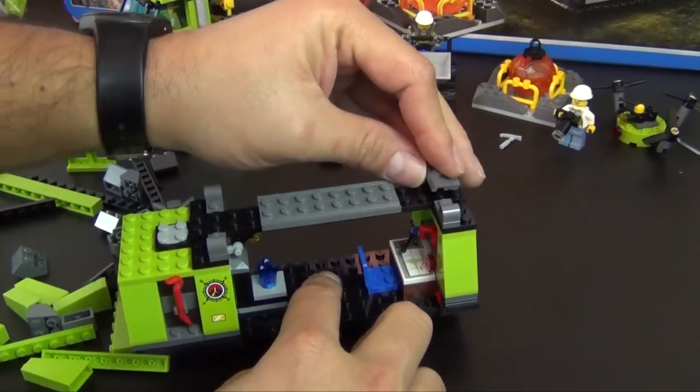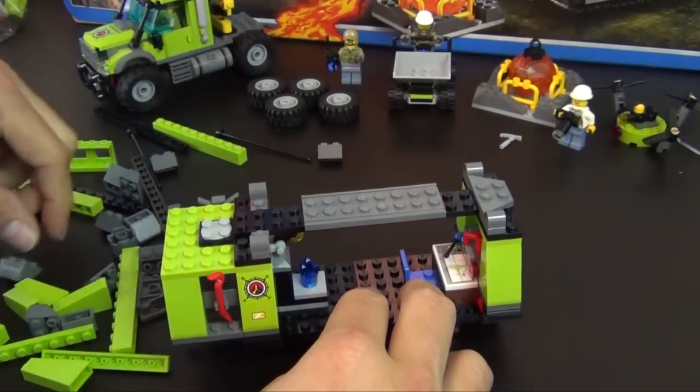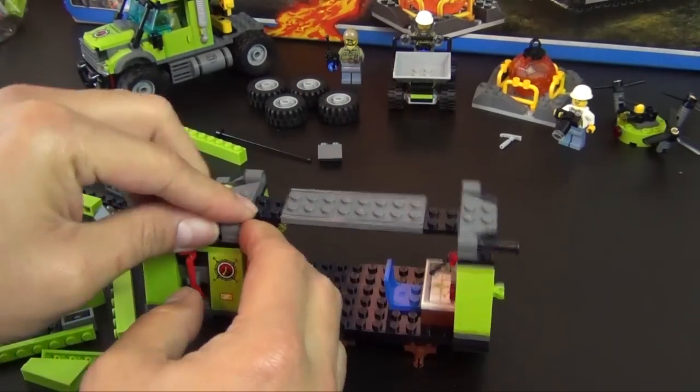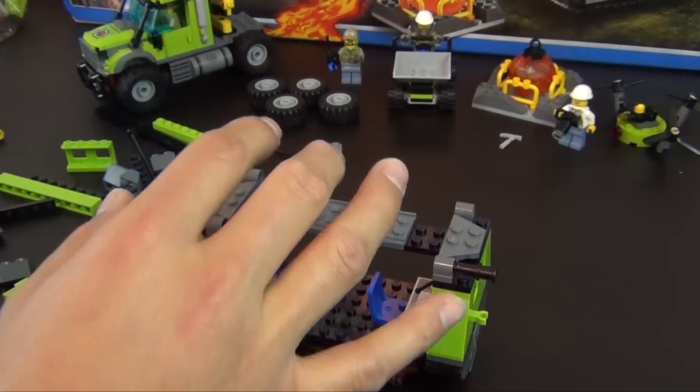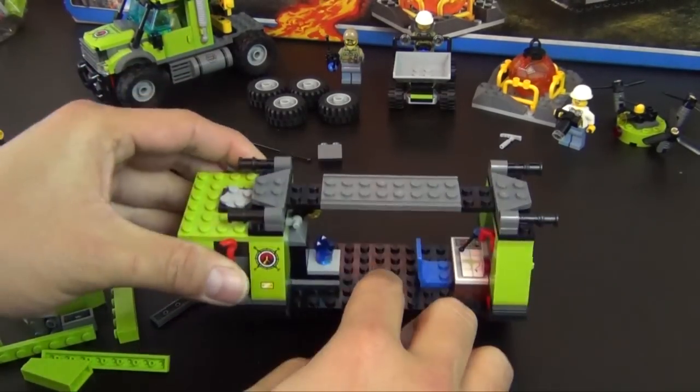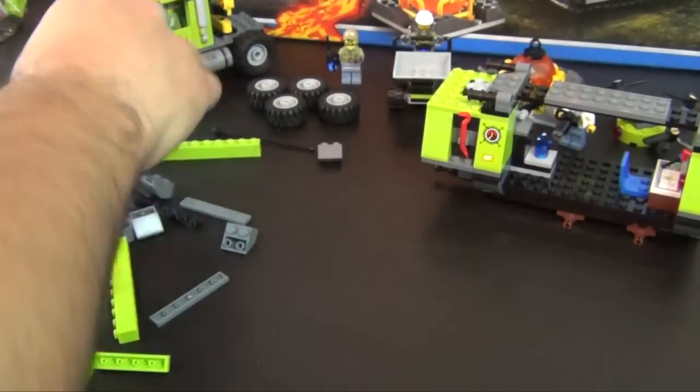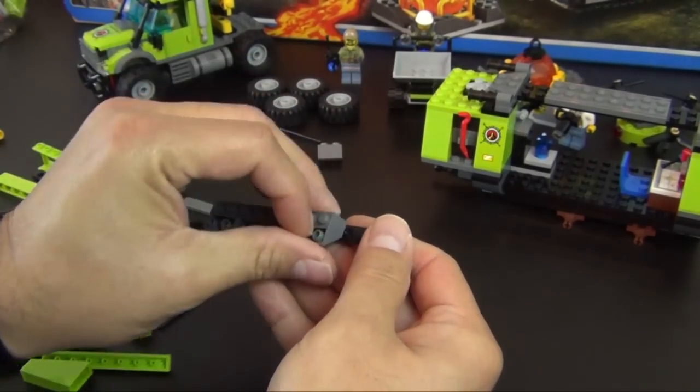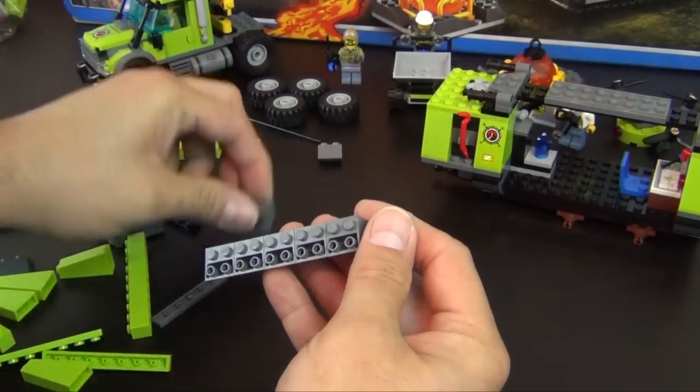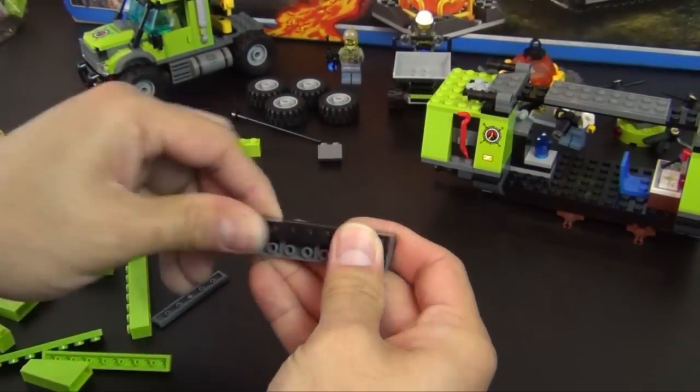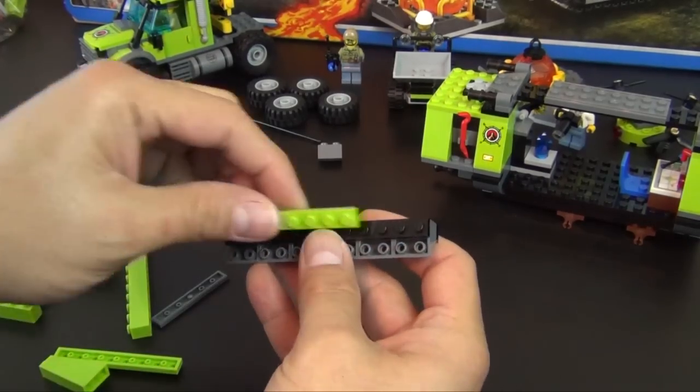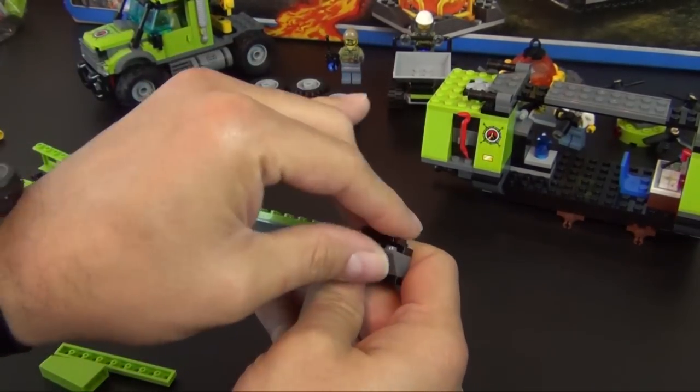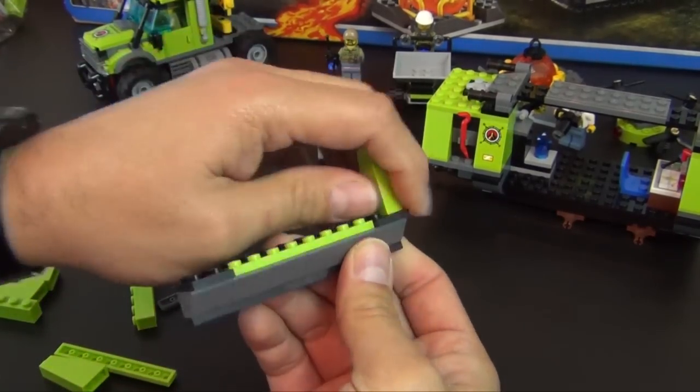We have some wedge plates, a modified pin with axle hole. We kind of start to push them in but we don't push them in all the way, that way we can attach the next piece to it. So this is going to be the beginnings of the first door.